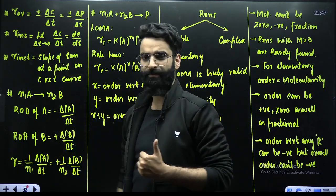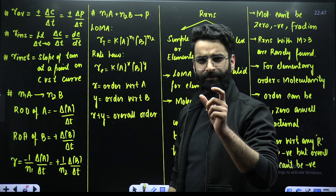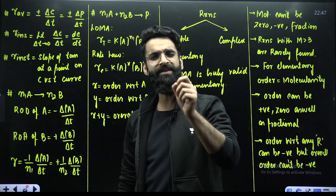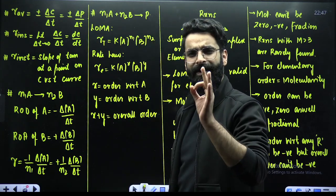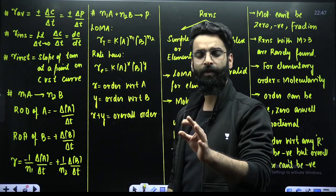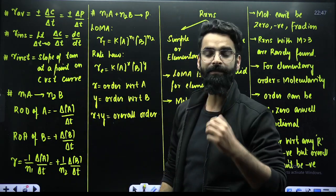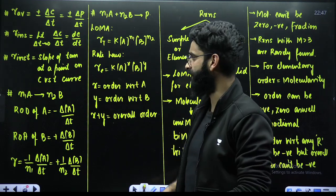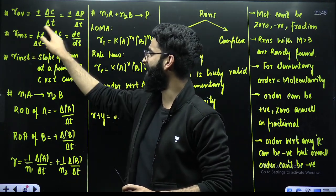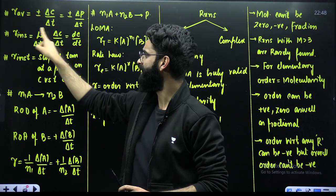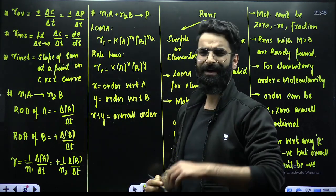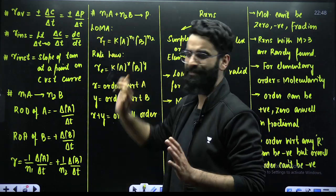Then we have the instantaneous rate of reaction. Instantaneous rate of reaction is calculated in a very small time interval — that means delta T approaching towards zero. That rate which we calculate in such a short interval is called instantaneous rate of reaction. To convert average rate into instantaneous, it is delta C upon delta T with the limit delta T approaching towards zero, represented simply as DC upon DT.